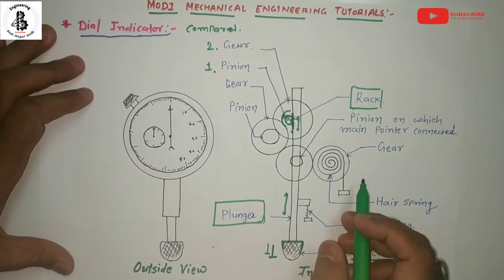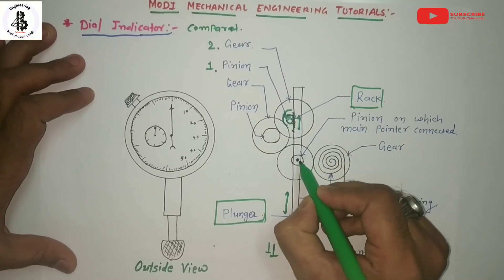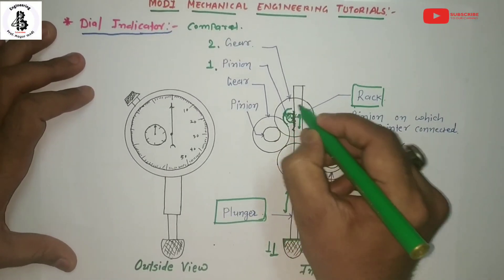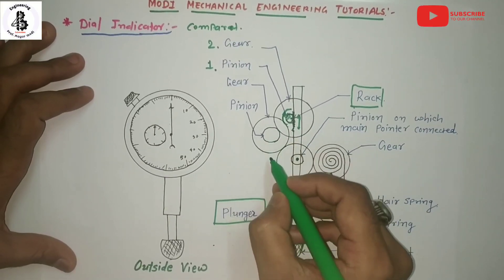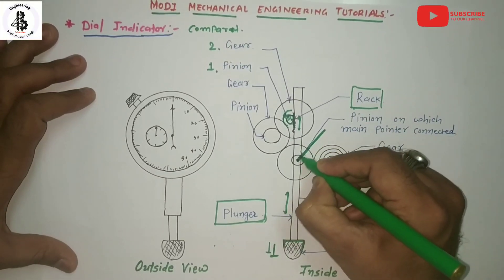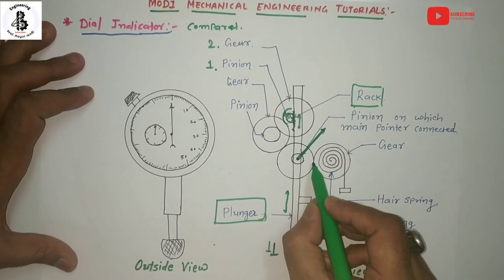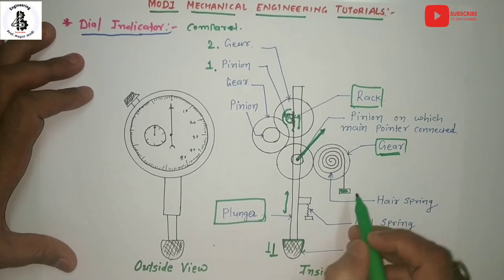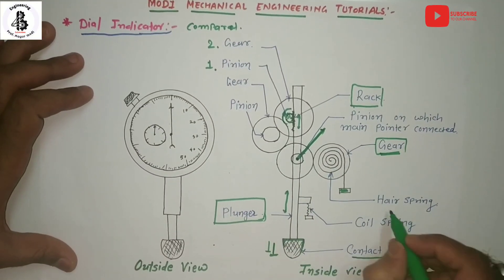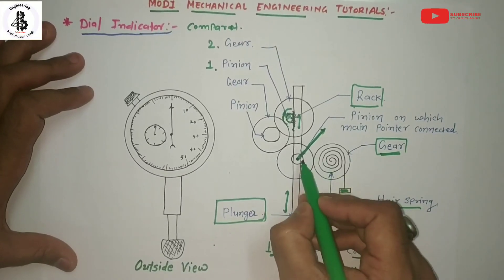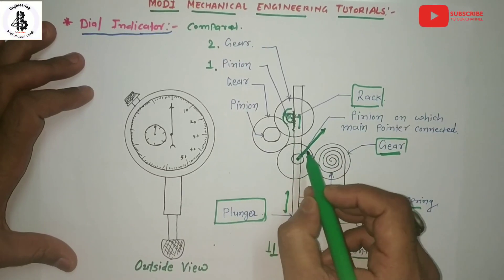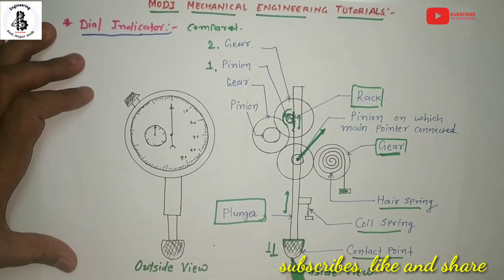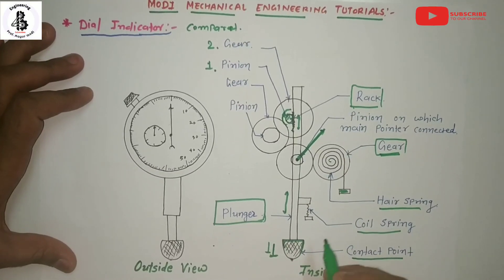Finally, the pointer is attached onto the final pinion, and according to that movement the pointer rotates. The pinion is also connected with a gear mechanism. When the load is removed, the hair spring returns the pointer to its initial position. The coil spring ensures that when the dial indicator is positioned against the measured surface, it returns to a stable condition, giving a zero reading.